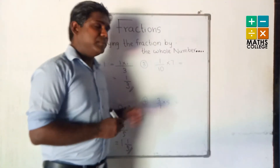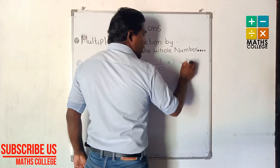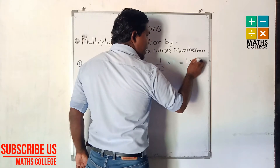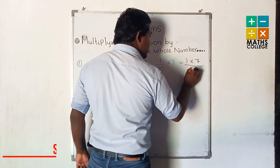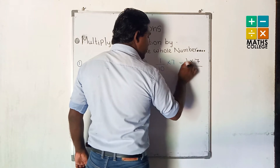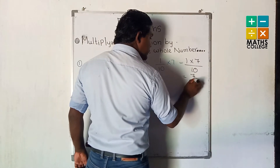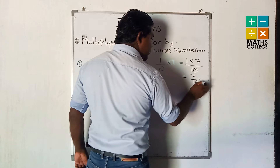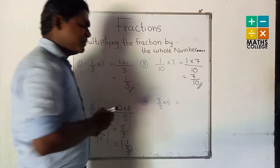Third one: 1 multiplied by 7 upon 10. 1 multiplied by 7 is 7 upon 10, and that is the answer.